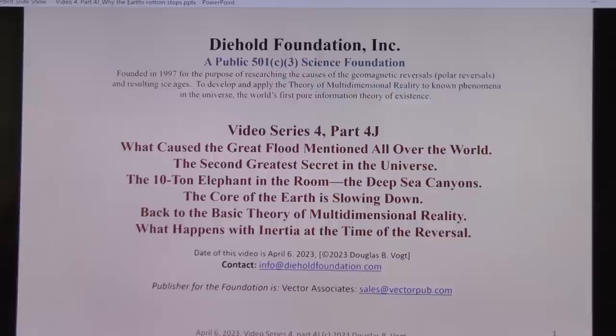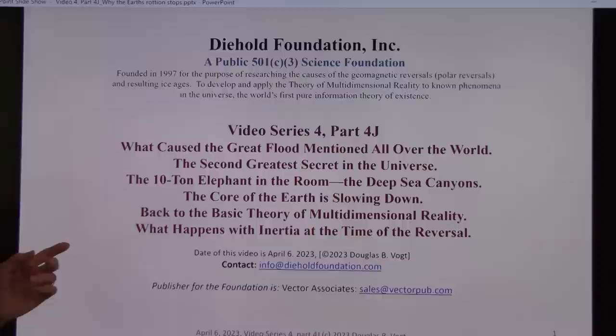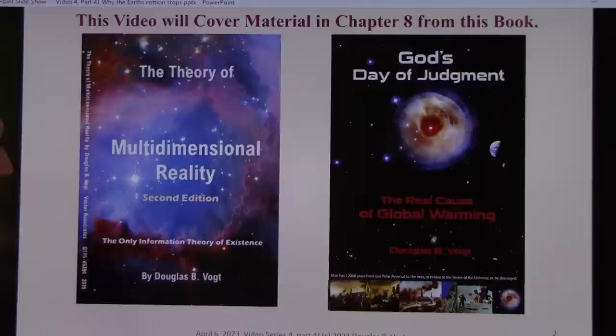The 10-ton elephant in the room is the deep sea canyons. We know they're there. There's only one way they could be formed. I'll explain it later. The core of the Earth is slowing down. There's a most recent journal article that came out. Back to the basic theory of multidimensional reality, it's the only way you could explain it. What happened with inertia at the time of the reversal? And that's the key.